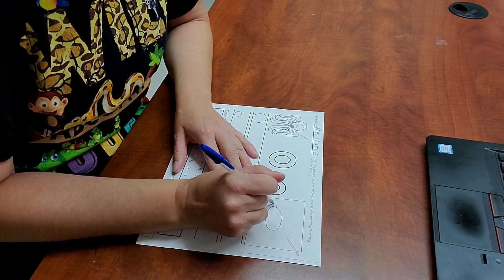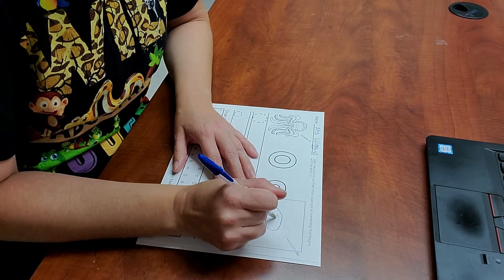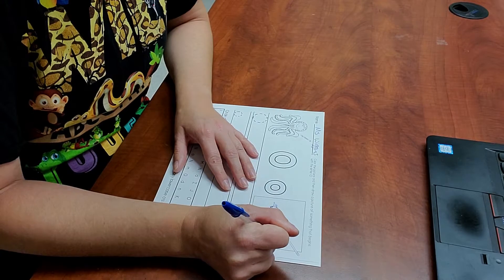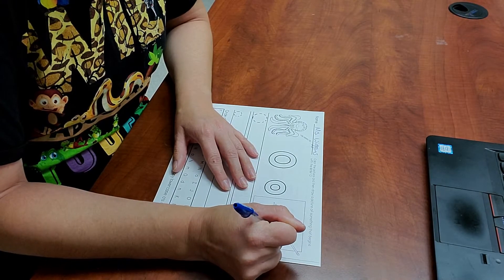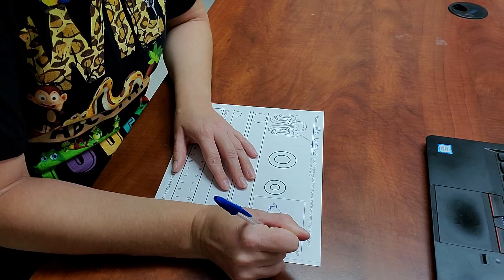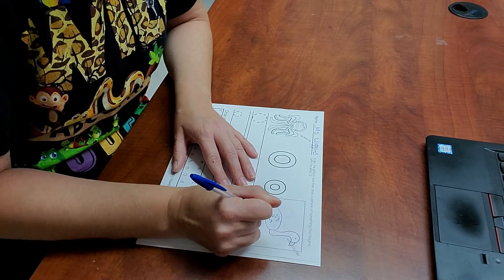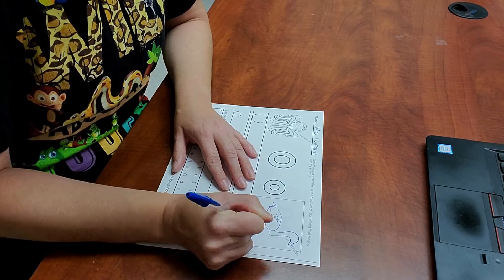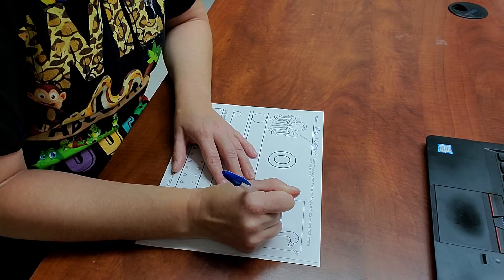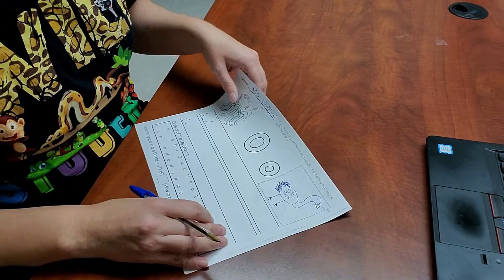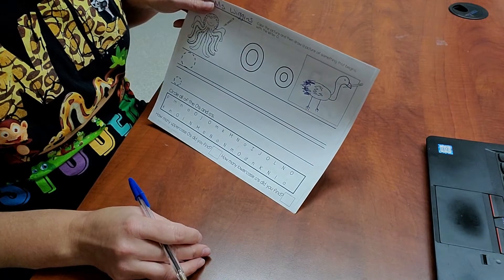So an ostrich has feathers. Then an ostrich has a long neck. Got to put the beak on him. He looks just like the flamingos do, only he's got lots of feathers. He's a little bit bigger than, or a lot bigger than a flamingo.